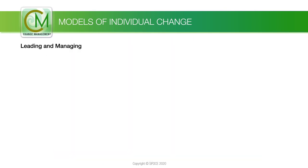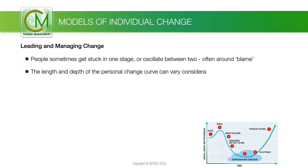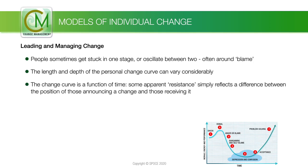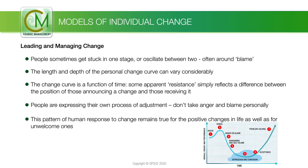Thinking about the stages that people may go through during change, these are some practical observations for leading and managing change. People sometimes get stuck in one stage or oscillate between two, often around blame. The length and depth of the personal change curve can vary considerably. The change curve is a function of time. Some apparent resistance simply reflects a difference in position between those announcing a change and those affected. This pattern of human response to change remains true for positive changes in life as well as for unwelcome ones.